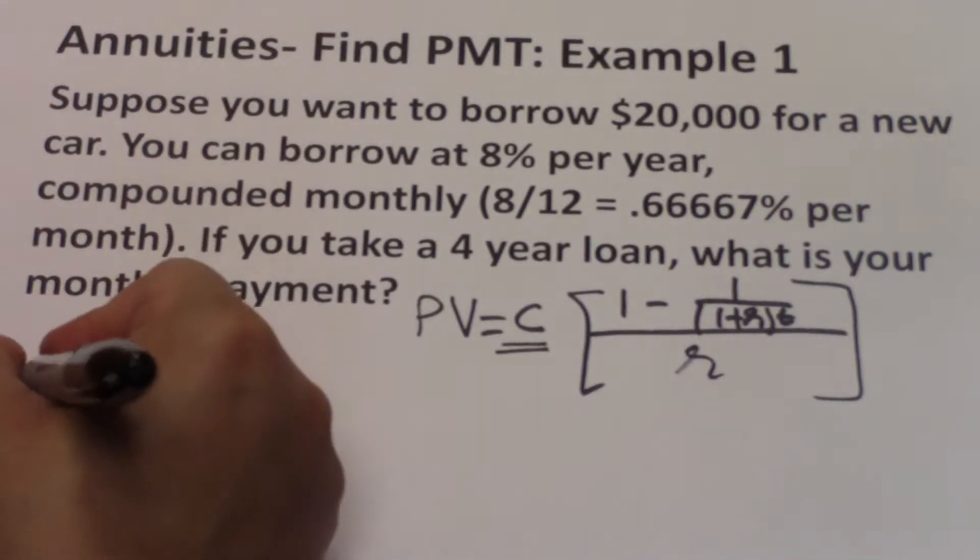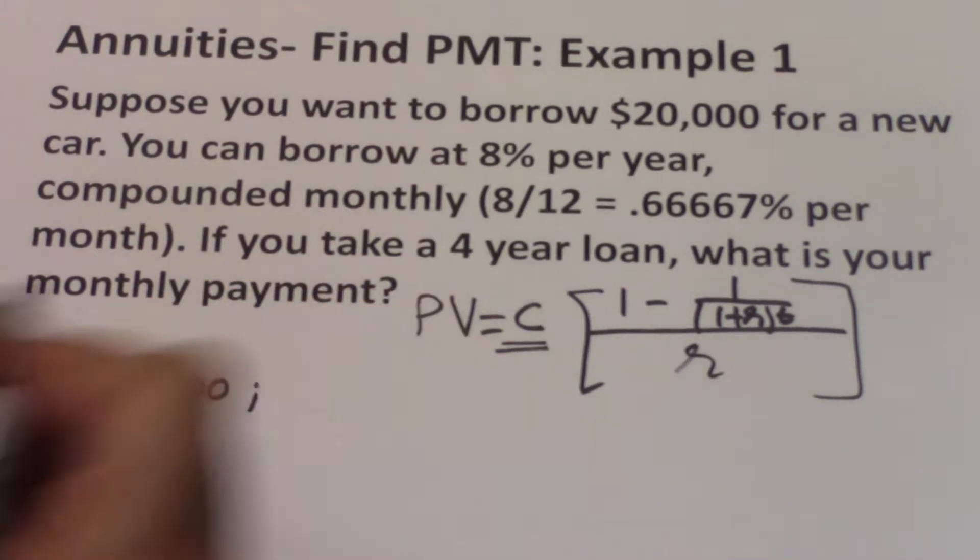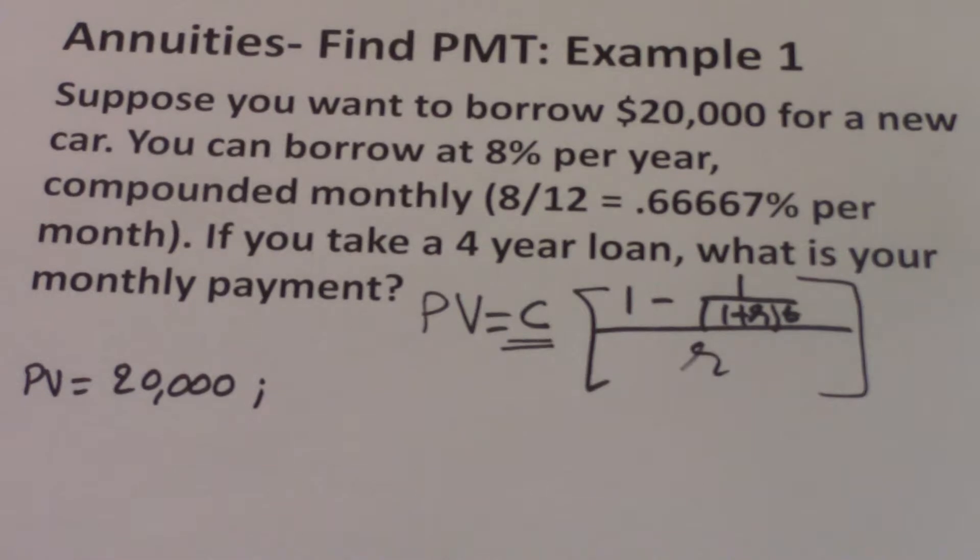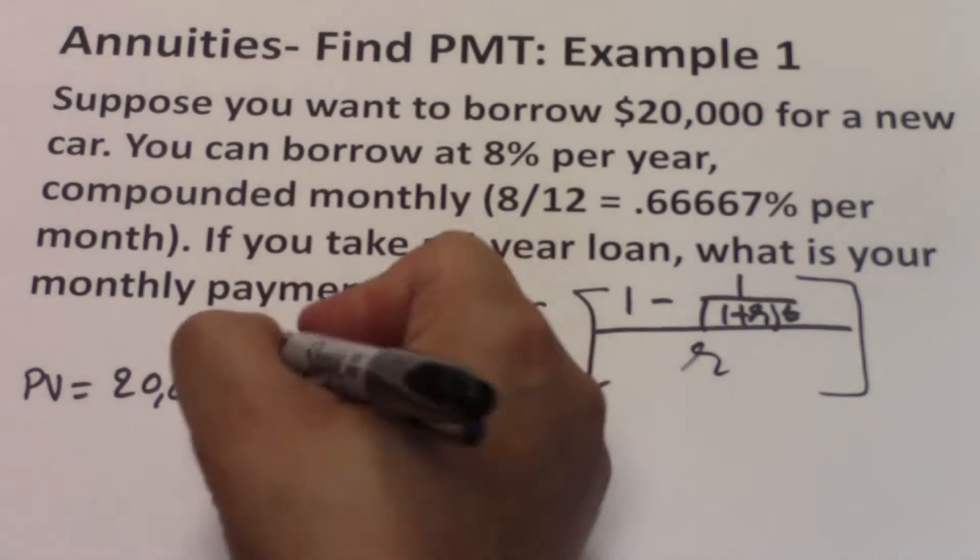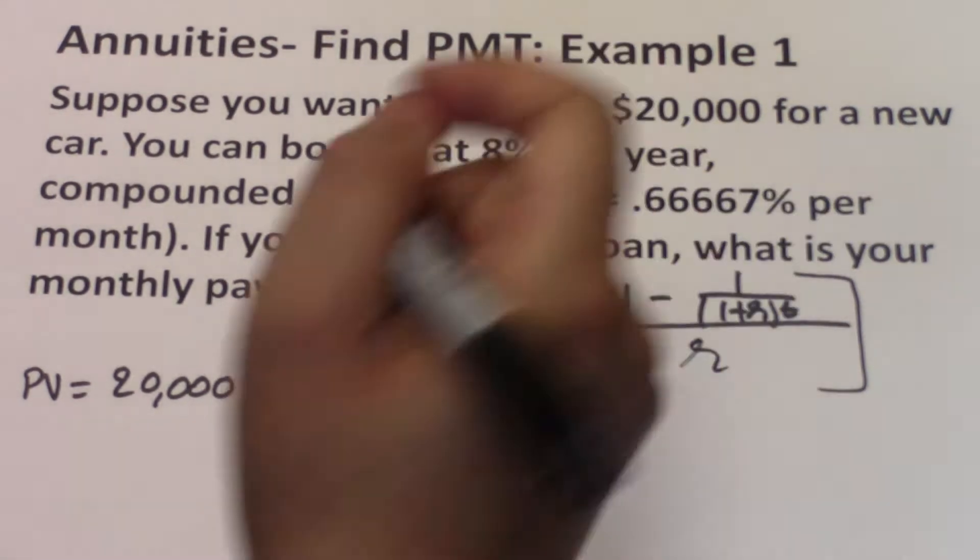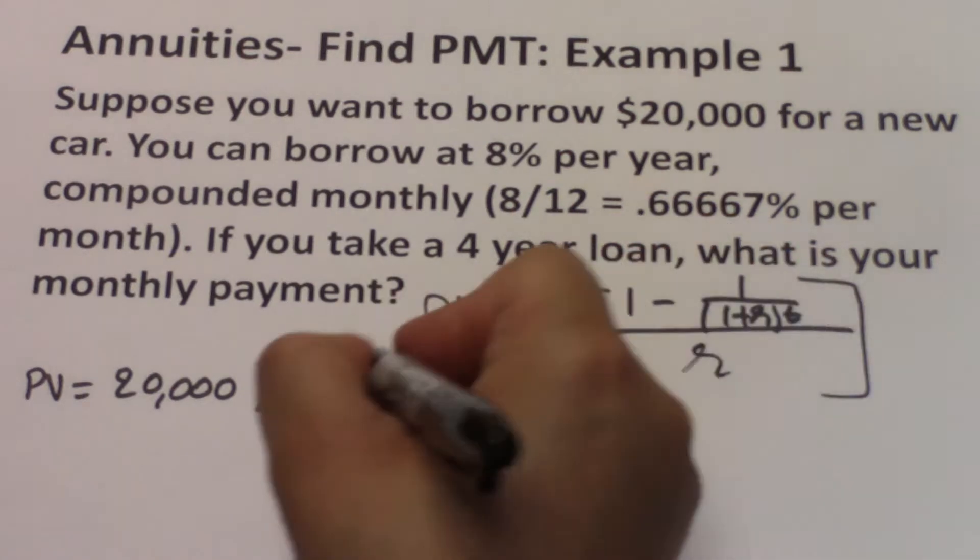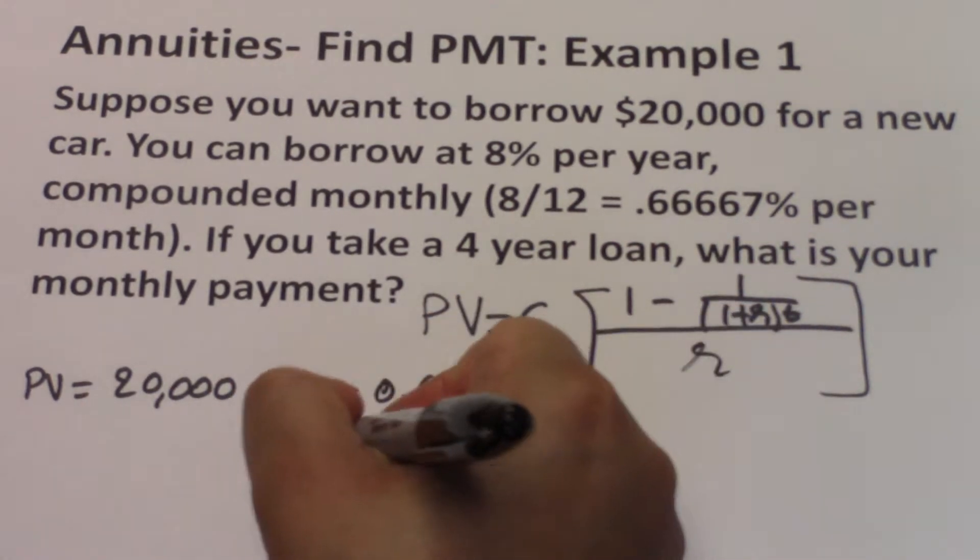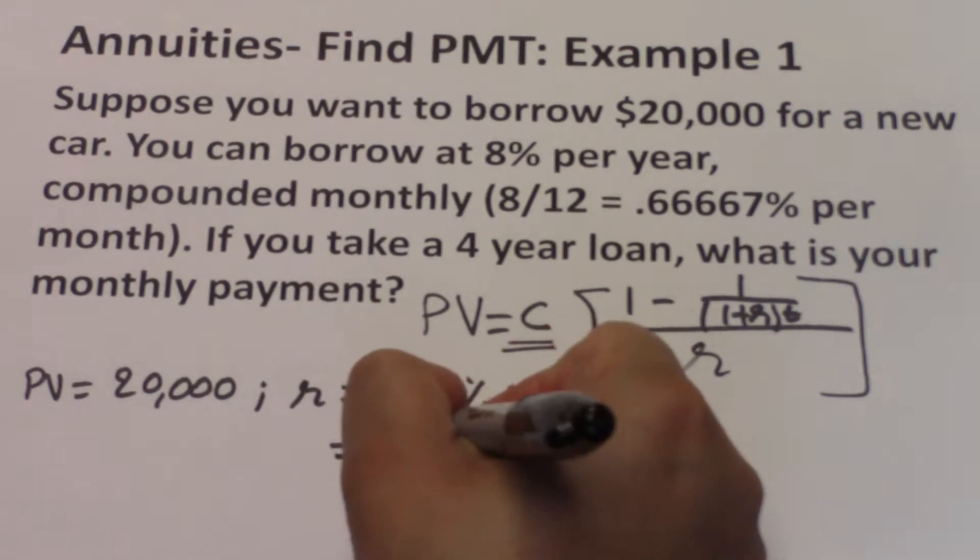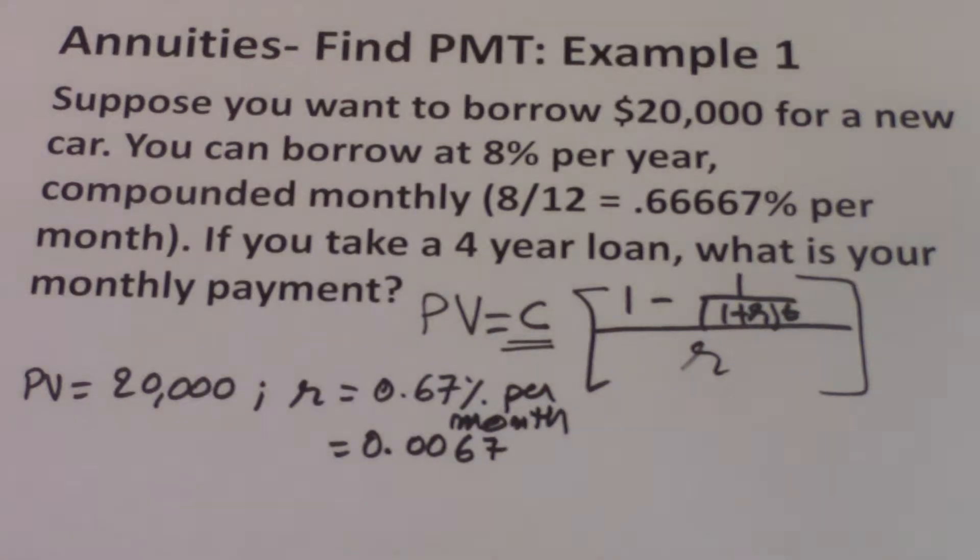The present value is $20,000. The R is the interest rate, 0.67% per month, or 0.0067 as a decimal, because it has to be imported into the calculator as a decimal.